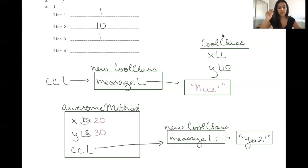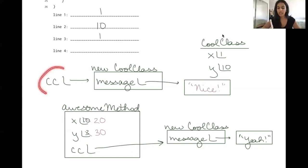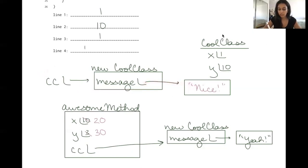The final line prints cc.message. Message is an instance variable, so we check the actual object cc is pointing to. We look at its message field and see it's pointing to "nice", so the output is "nice". And that's all for Part 3B.